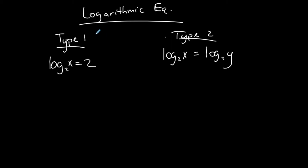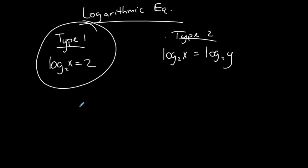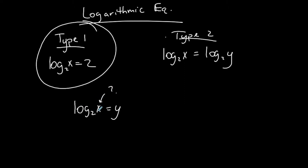I'm going to focus on Type 1 in this video and then cover Type 2 in the next video. There's something we need to talk about regarding the domain — what values are allowed for x. If I convert a logarithmic equation back into exponential form, the base of the log raised to y is equal to x, where x represents the outcome of the exponential function.